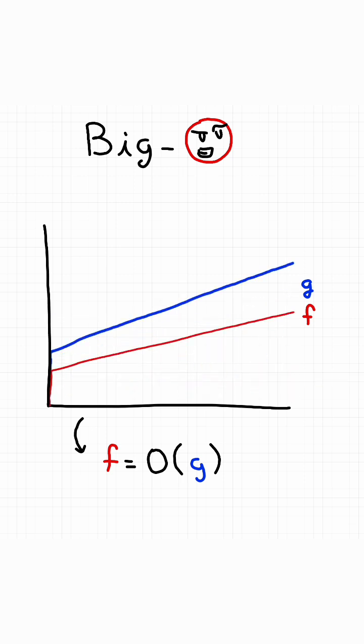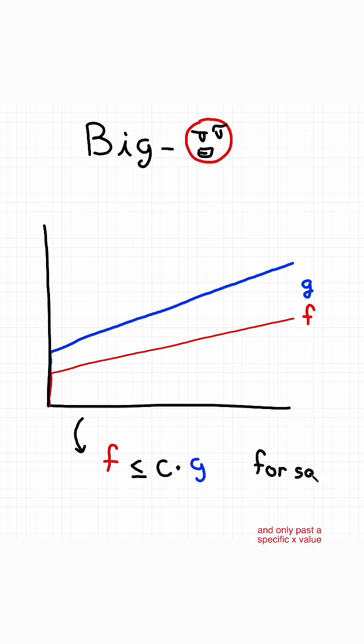Ideally you want a tight bound, meaning you can make f and g similar by multiplying f by a constant, which I'm representing here by scaling it up and down. More formally, this means f and g are asymptotically equivalent.